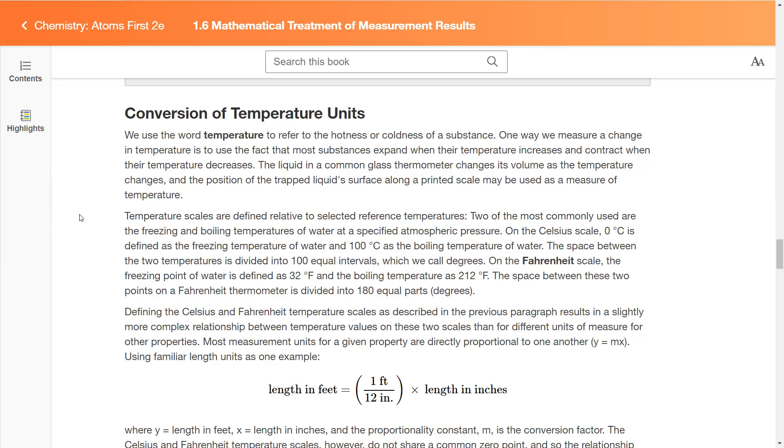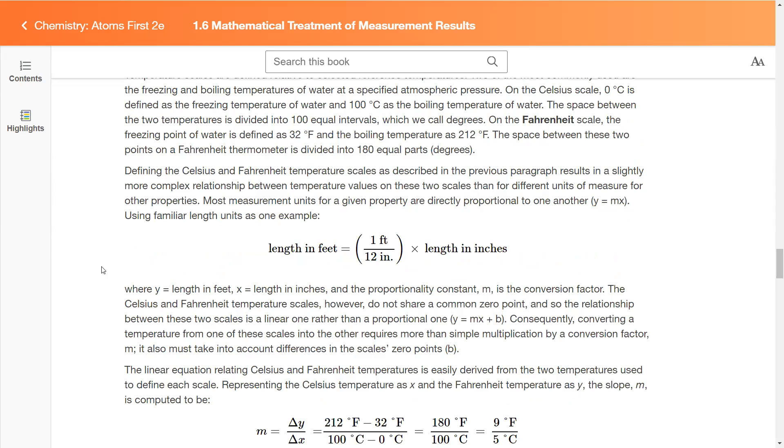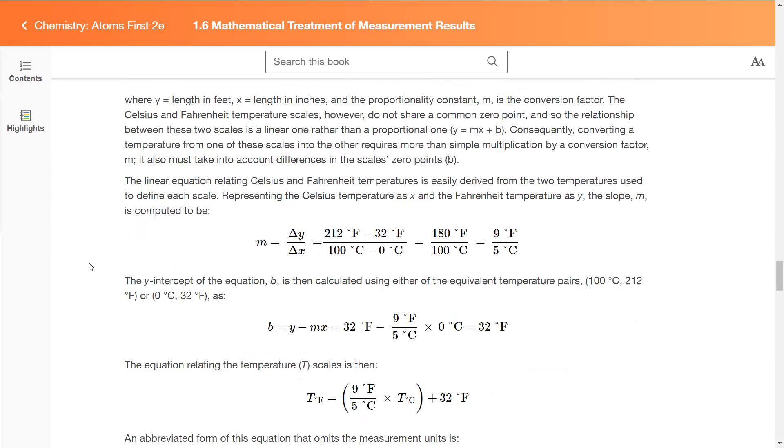However, on the Fahrenheit scale, the freezing point of water is 32 degrees Fahrenheit and the boiling temperature is 212 degrees Fahrenheit. This does not allow us to have a conversion factor where we would just multiply. Instead, we have a linear relationship. The relationship between these two scales is a linear one rather than a proportional one - it fits that linear equation y equals mx plus b.